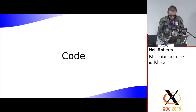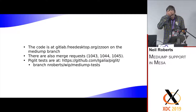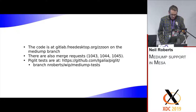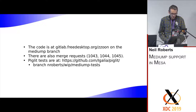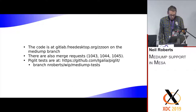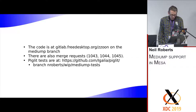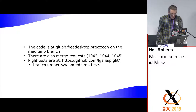The code for the pass is available on this branch, and we have merge requests open. There are three merge requests: one for the main part of the lowering pass, one that adds a bunch of Freedreno changes to improve handling of float16 types in general, and a third one. The tests are also available on this branch.